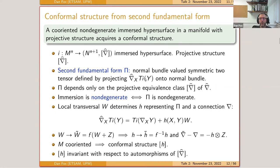Because any two representatives of the projective structure differ by a one-form in a way that is tangential, the projection doesn't actually depend on the choice of representative—it only depends on the projective equivalence class of the connection. So we get a well-defined symmetric two-tensor valued in the normal bundle, which I call the second fundamental form, and I say the immersion is non-degenerate if that two-tensor is non-degenerate.